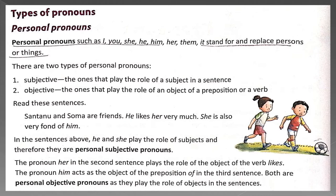Subjective is the one that plays the role of a subject. In short, used for subjects. For example: I, we, he, she. The second one is Objective — the one that plays the role of an object of a preposition or a verb, used for objects. For example: me, us, him, her.